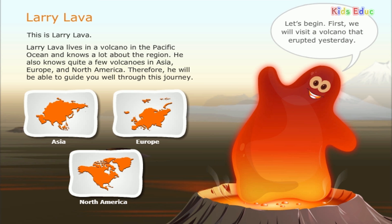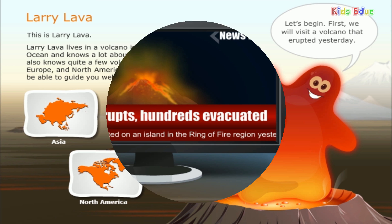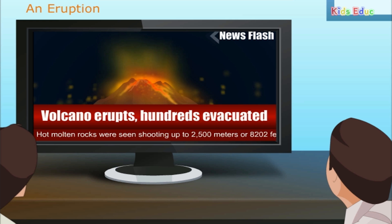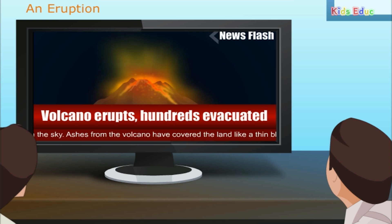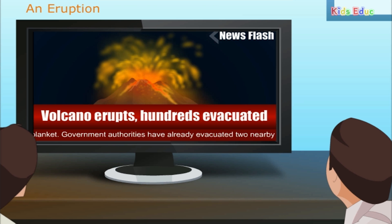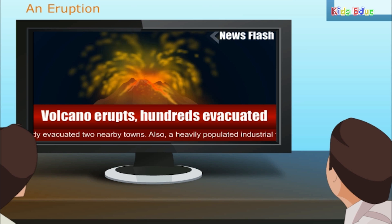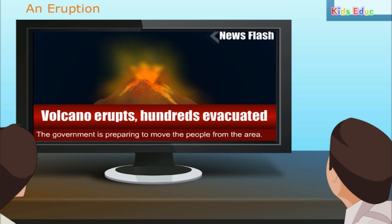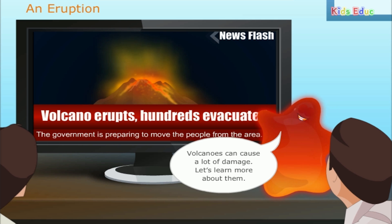We will visit a volcano that erupted yesterday. A volcano erupted on an island in the Ring of Fire region. Hot molten rocks were seen shooting up to two thousand five hundred meters, or eight thousand two hundred and two feet, in the sky. Ashes from the volcano have covered the land like a thin blanket. Government authorities have already evacuated two nearby towns, and a heavily populated industrial town is within the danger zone of the spreading ash. The government is preparing to move the people from the area. Volcanoes can cause a lot of damage — let's learn more about them.